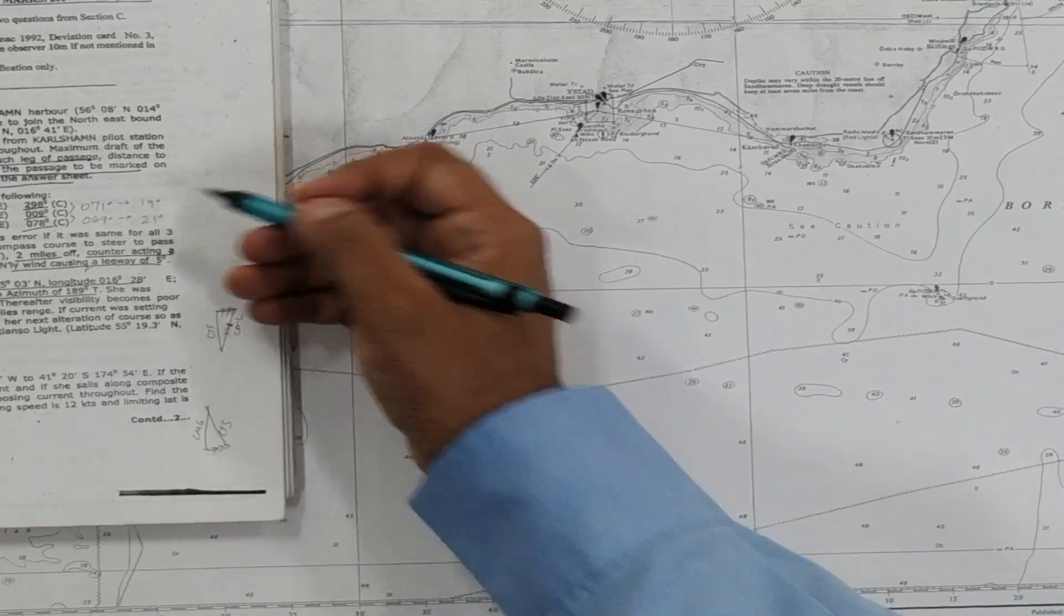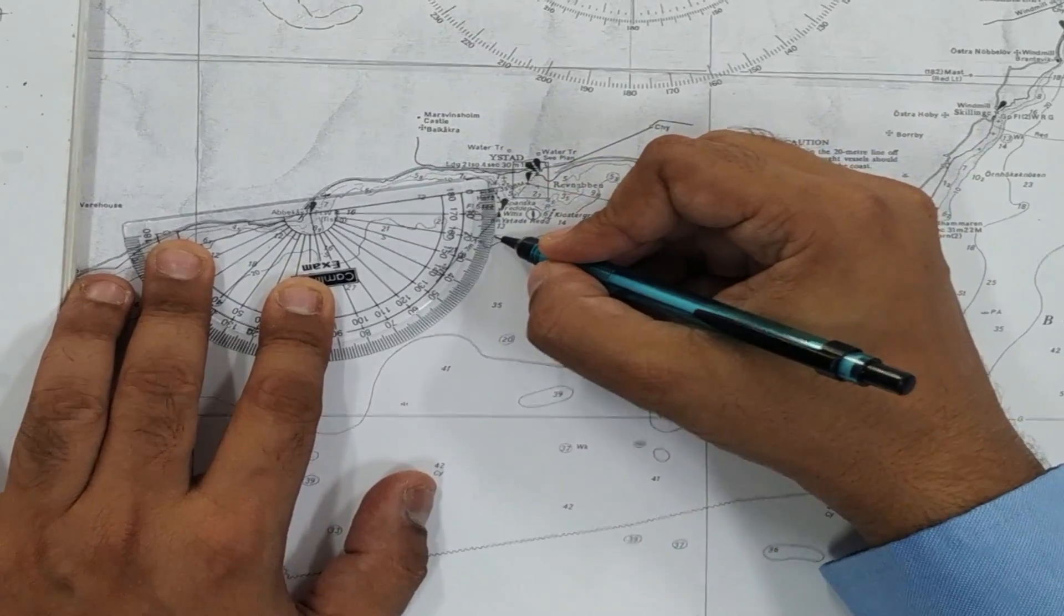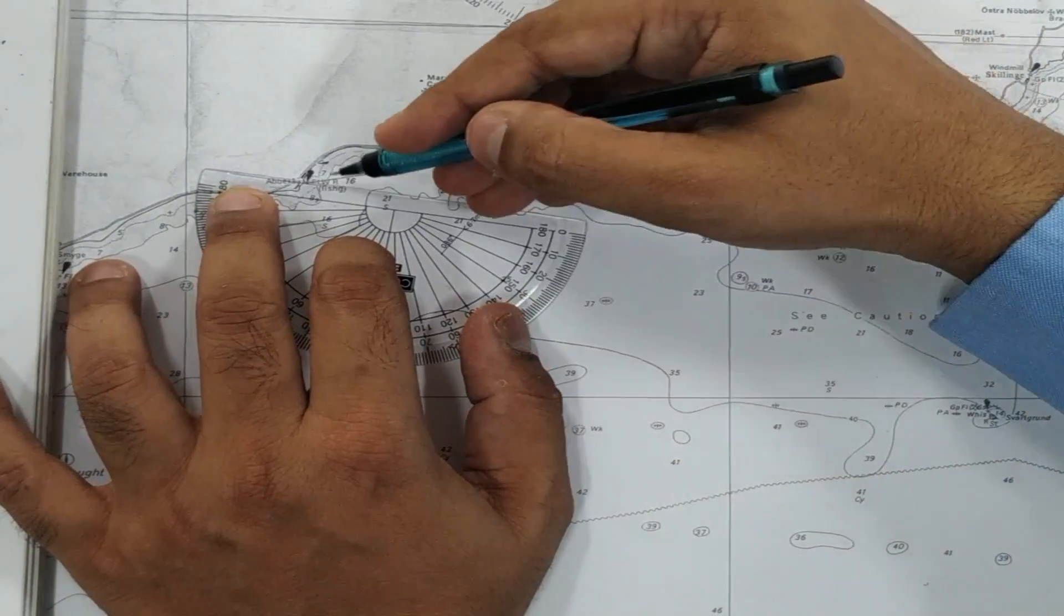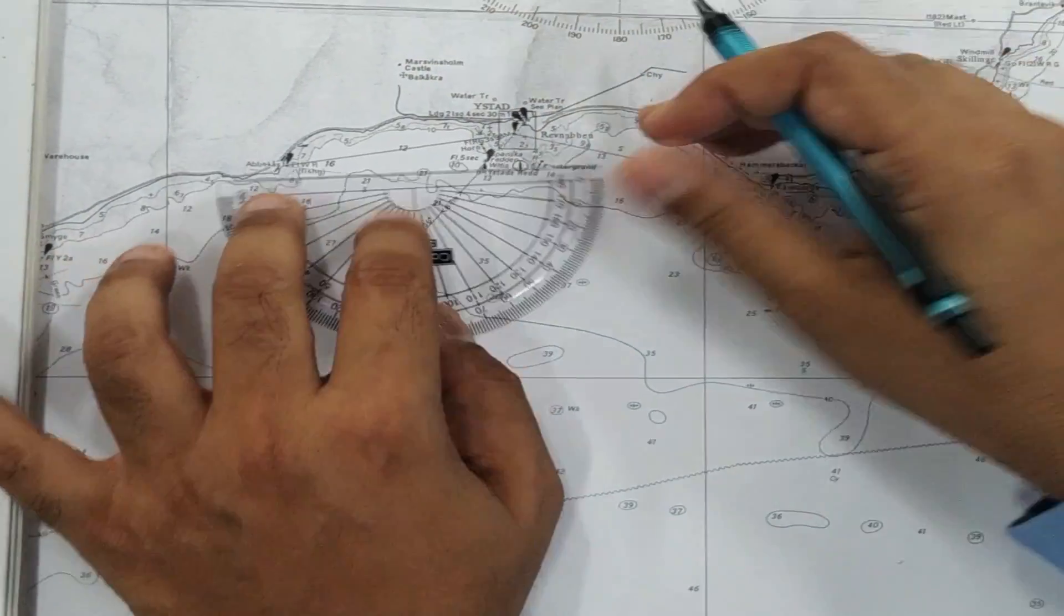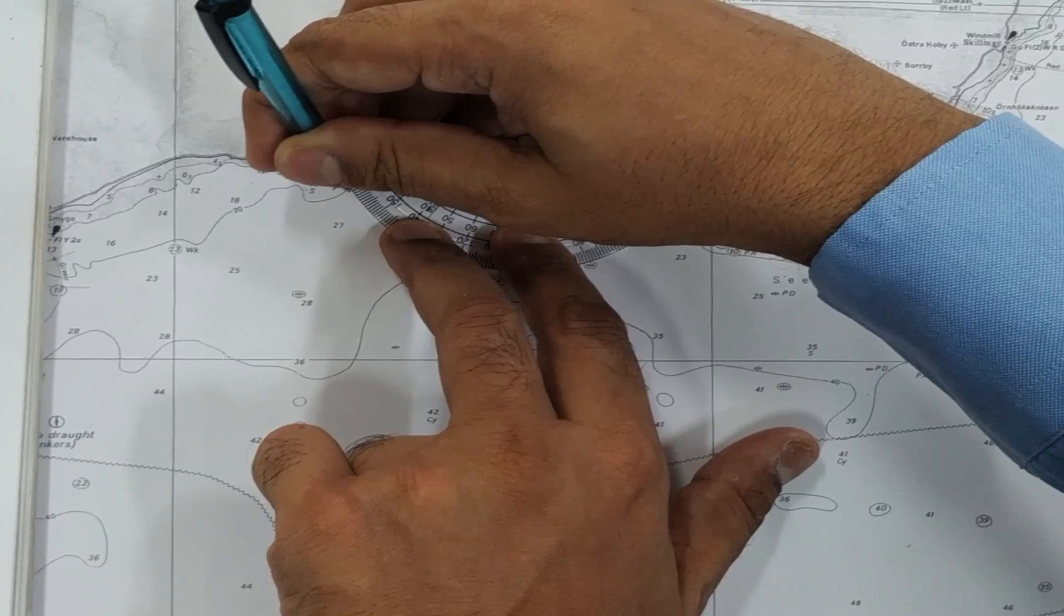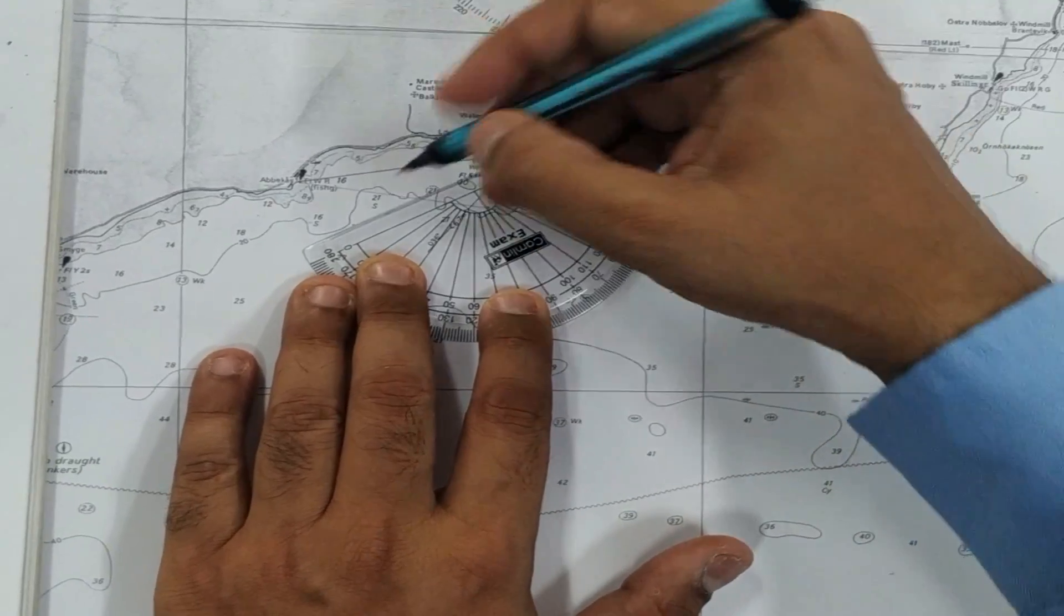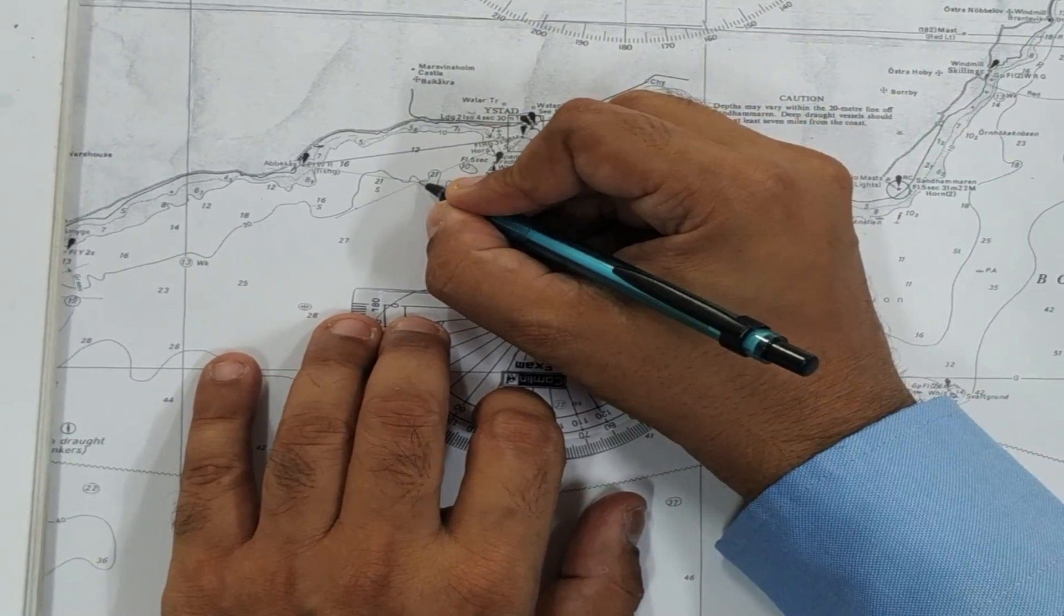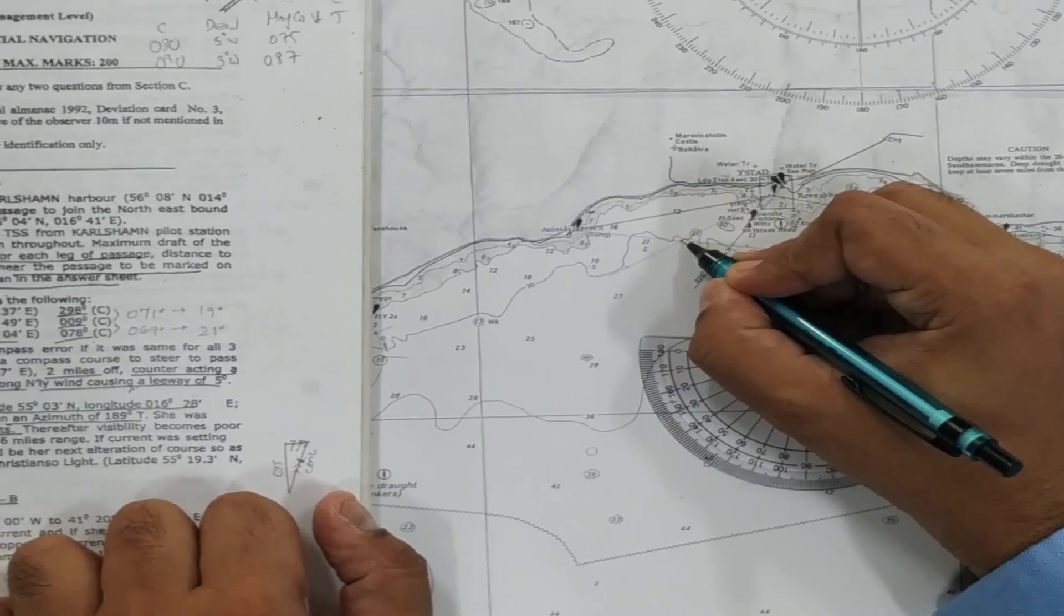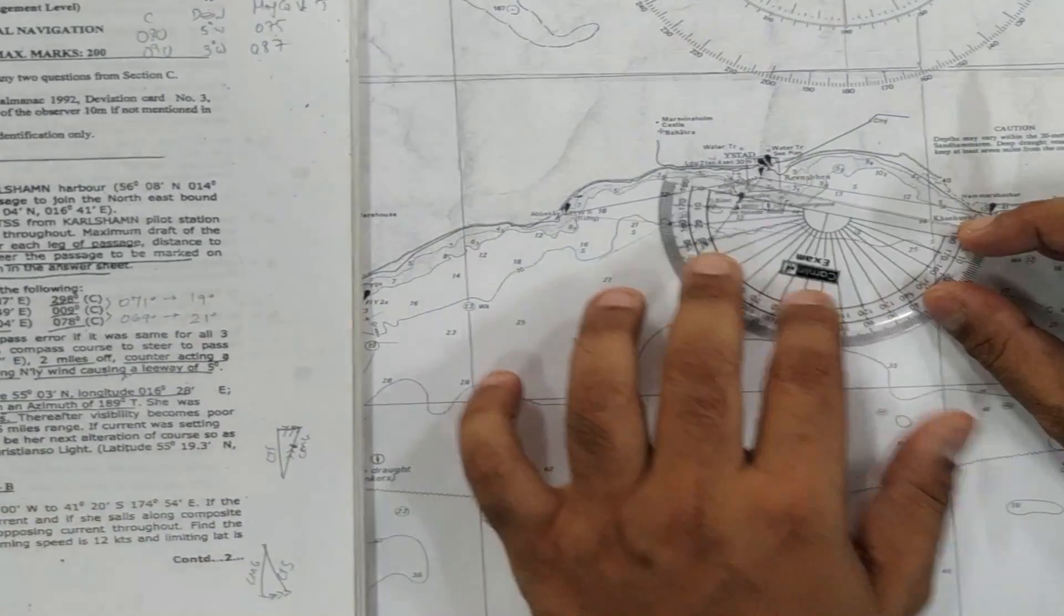Once that is done, we go to the next step of drawing this angle, 19 degrees, on the baseline. So we take our sets. So this is 019 degrees. We draw it on the baseline and we see that it intersects at this point. So we mark this point. That is part one.